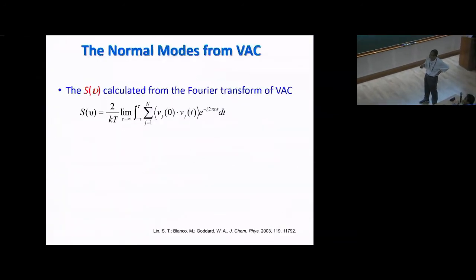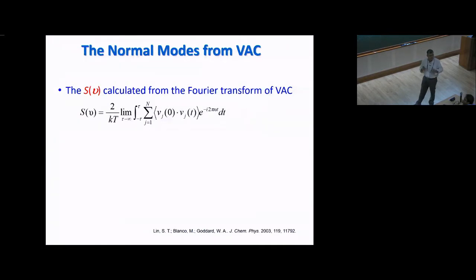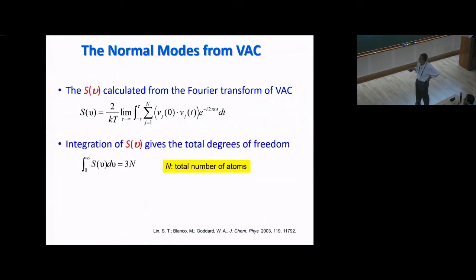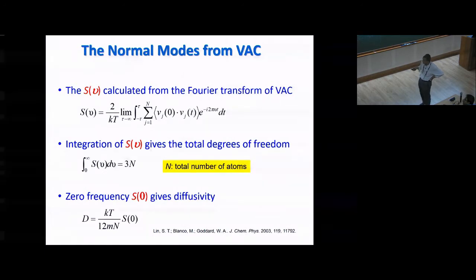My colleague and friend Sang-Thai did this many years back with Bill Goddard — can we apply this same methodology to more interacting and diverse systems? The idea is to get the density of states from simulation via the velocity autocorrelation function. One important thing to notice is that the diffusion constant is related to S(0), the zero-frequency value of that density of states.